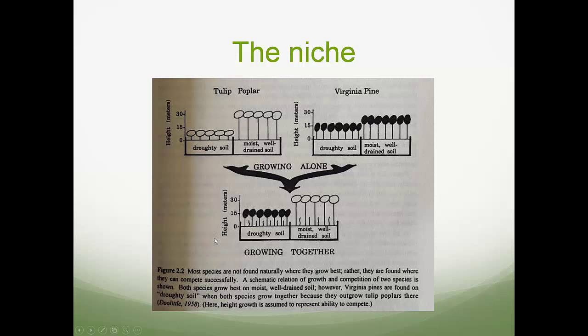Virginia pine can grow on both droughty and moist, well-drained soils — that's its fundamental niche. But its realized niche is really droughty soils because it's out-competed on the moist, well-drained soils. This idea will come into play when we talk about how we use different silvicultural systems in promoting different species.